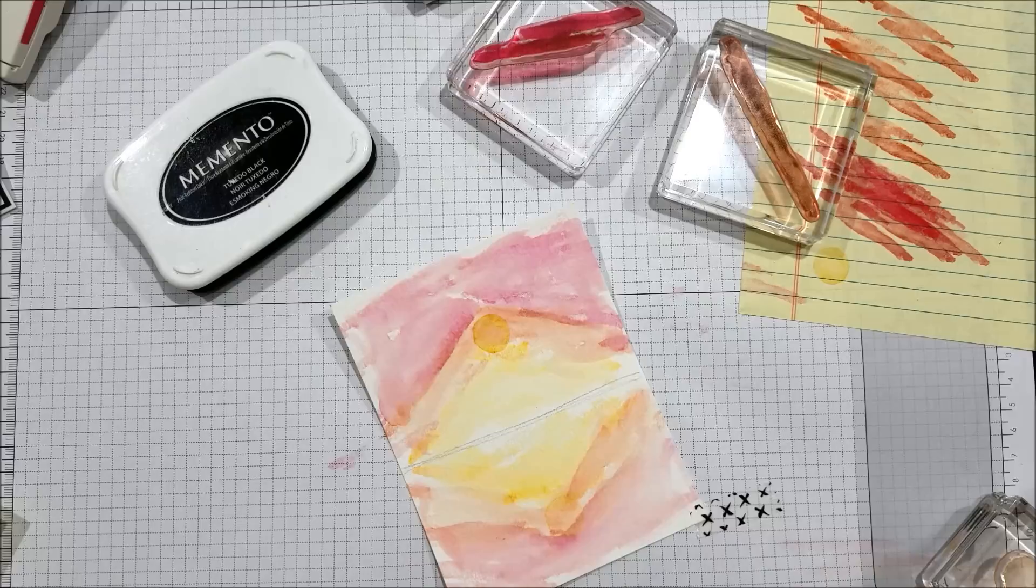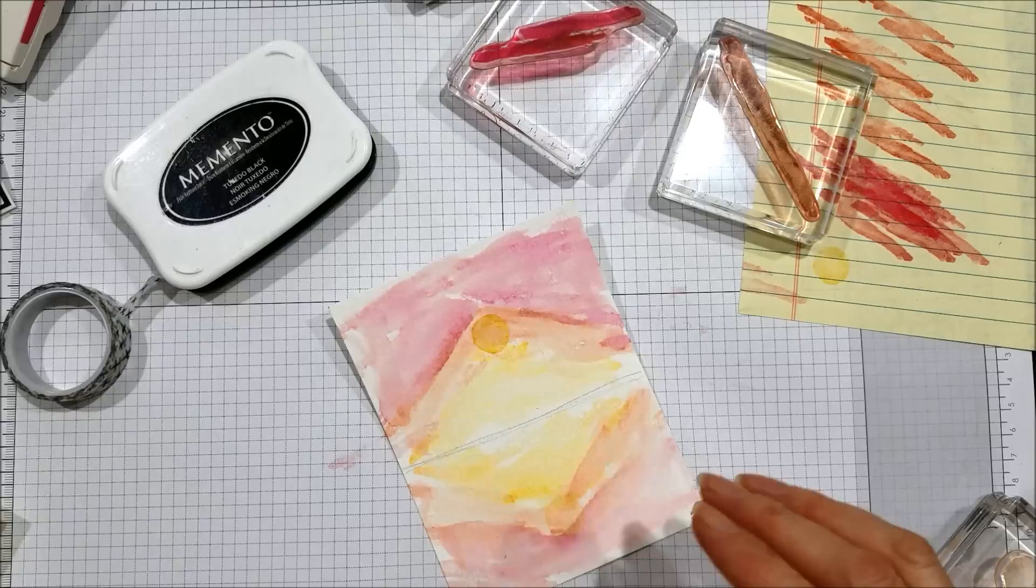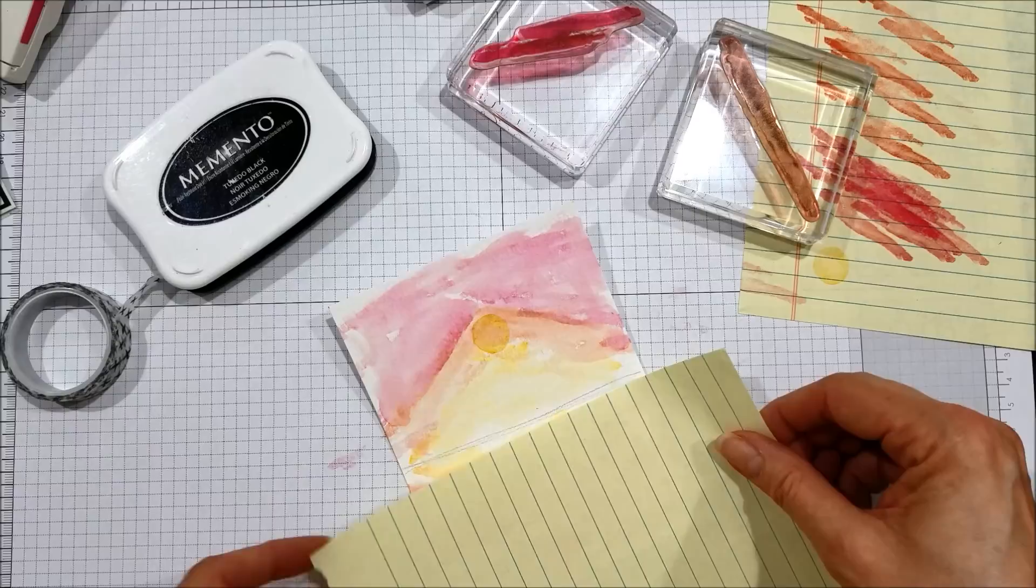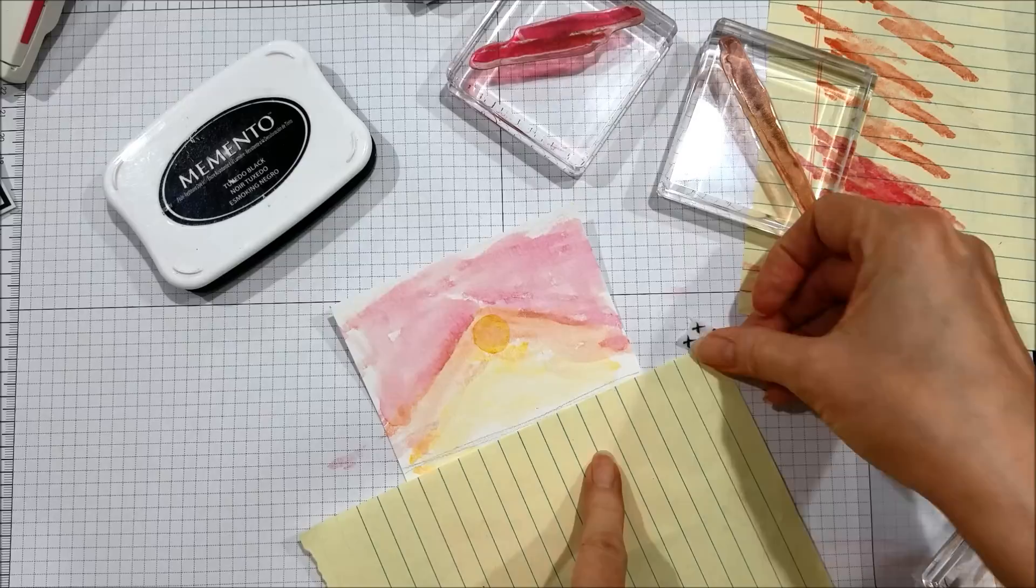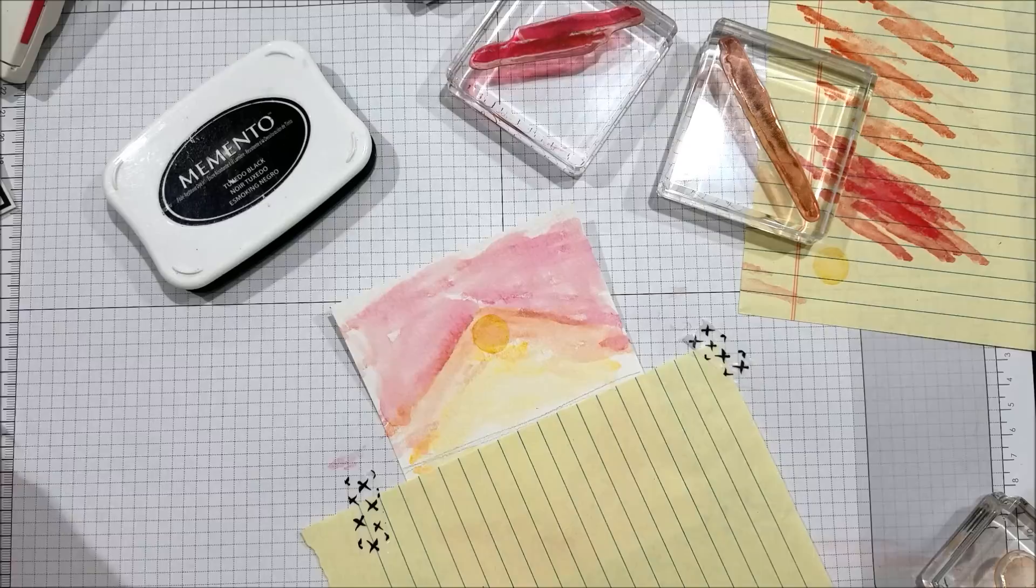For this next portion, I'm going to use a little piece of washi tape, a couple of pieces, to secure the base layer. I'm going to use a piece of scratch paper and put it roughly along that line, which as you can see, I did not draw very straight. Thank God stamping is not an exact science. I would never make it.